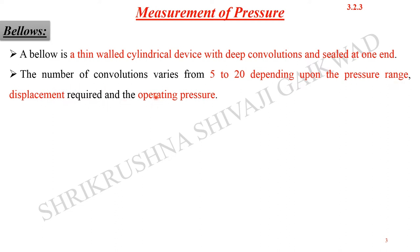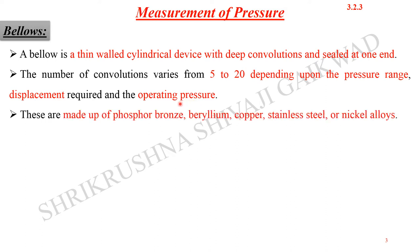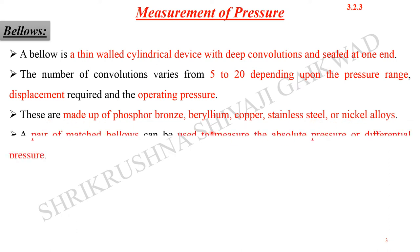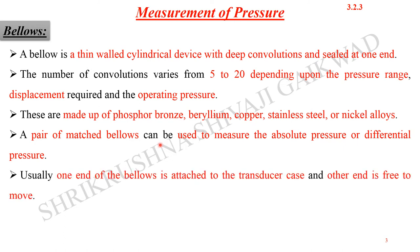Bellows are made of phosphor bronze, beryllium copper, stainless steel, or nickel alloys. A matched pair of bellows can be used to measure absolute pressure or differential pressure. For that, one end of the bellows is attached to the transducer case and the other end is kept free to move.